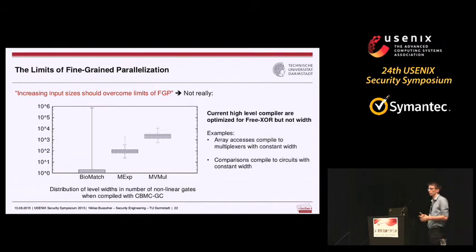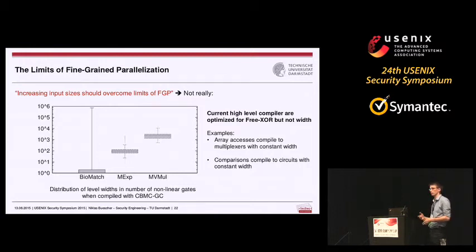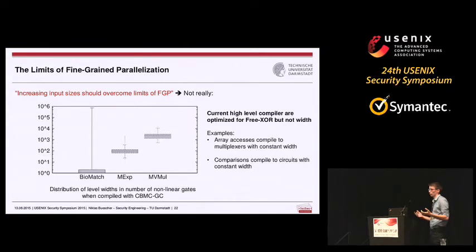Current high-level language compilers that compile to circuits do not look for width — they try to minimize the number of nonlinear gates. For CBMC, array accesses compile to circuits with linear depth and constant width, and the same goes for comparisons. Since the biomatch circuit has lots of array accesses and comparisons, even increasing the input size would still yield circuits with low average circuit width.